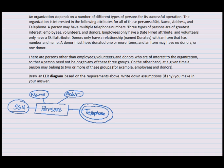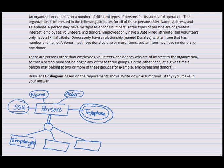Then three types of persons are of greatest interest. Let's just draw the subclasses. We'll specify later if it's distinct or overlapping. We'll continue on reading the question. If it's not specified, then we can use our own assumption. The entities that we have are three: employee, volunteers, and donors.